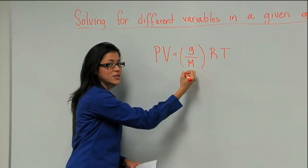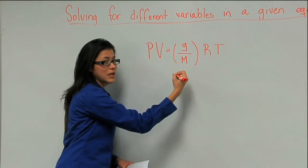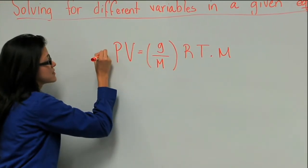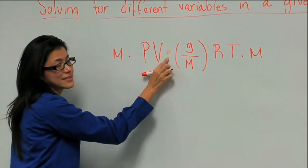How? If it's dividing on this side, that means we have to multiply. So we multiply by M on both sides, again to maintain the equality.